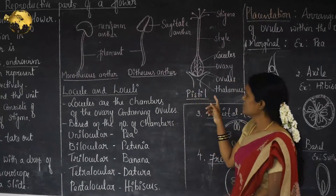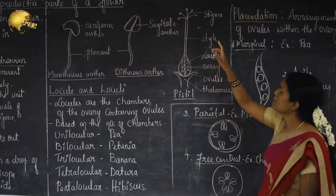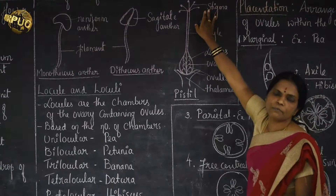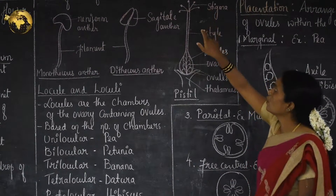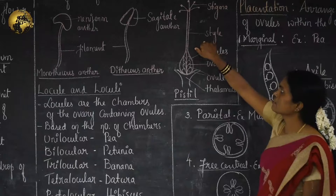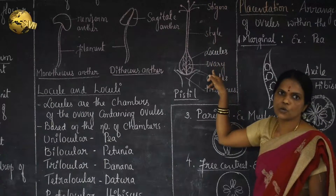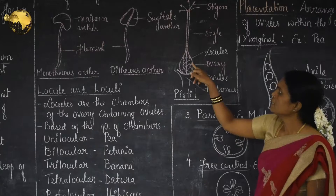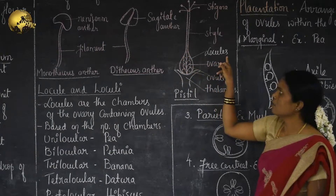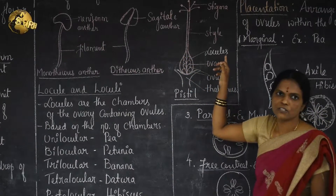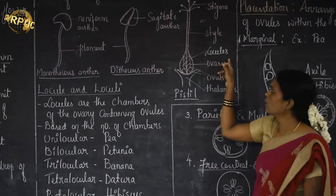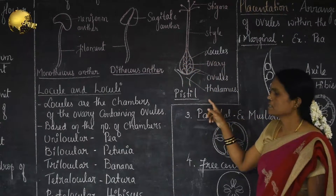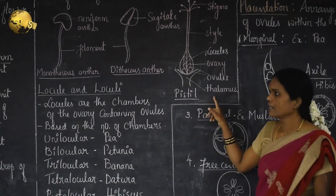If you observe the pistil or carpel, the pistil consists of the stigma, which is the receptive surface of the flower, a long slender style, and a bulged or swollen ovary. Inside the ovary, spaces are present called locules, also referred to as the chambers of the ovary, which enclose ovules.